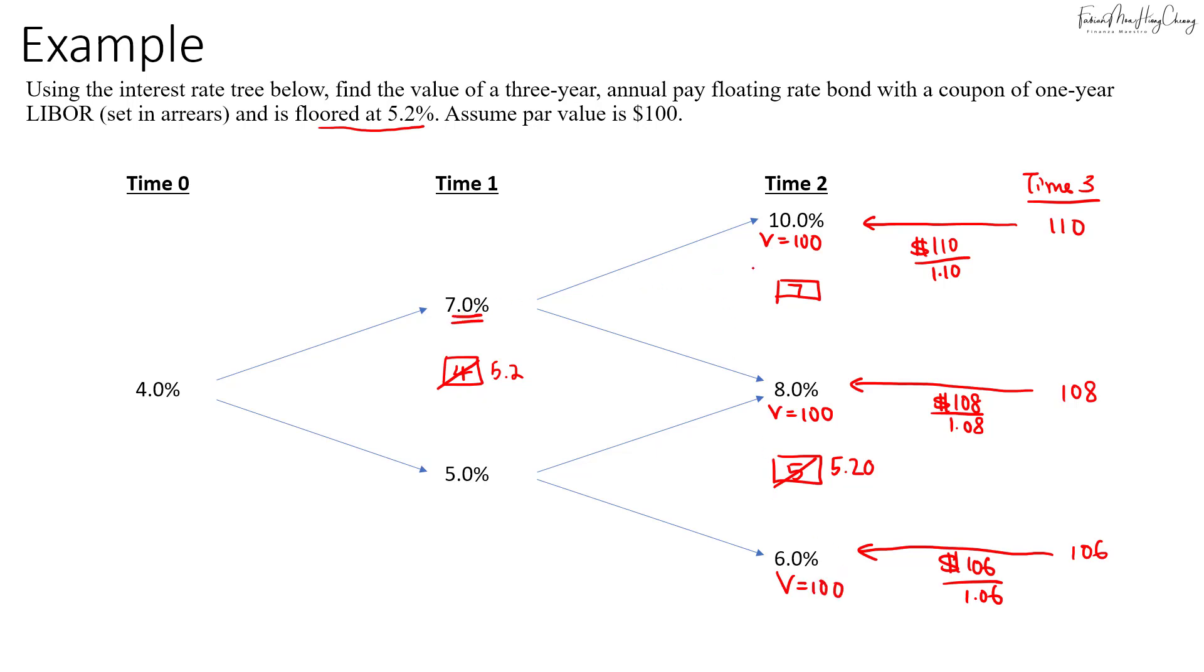Now we'll discount back to time 1 using the 7% rate. The value at this point will be 0.5 times 100 and 100, so it will still be $100, then we add in the coupon of $7 and discount at 7%, so the value will be $100. For this 5% rate, we'll do the same thing: the value is 0.5 times 100 plus 100, plus the coupon which is 5.20, then we discount it at 5%, so we'll get $100.19.